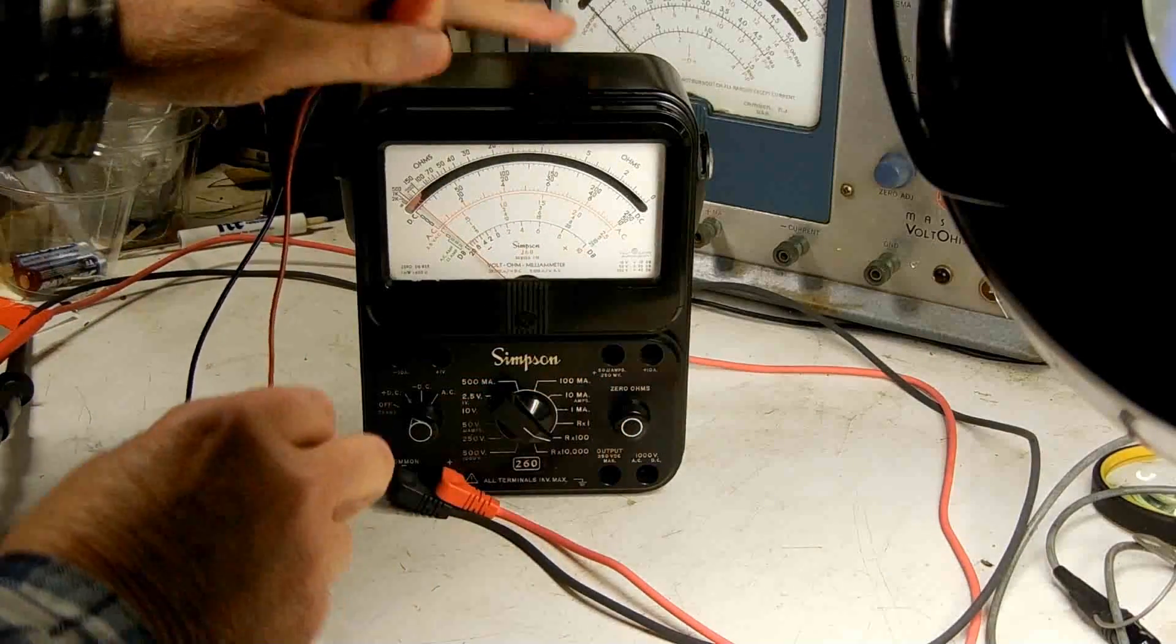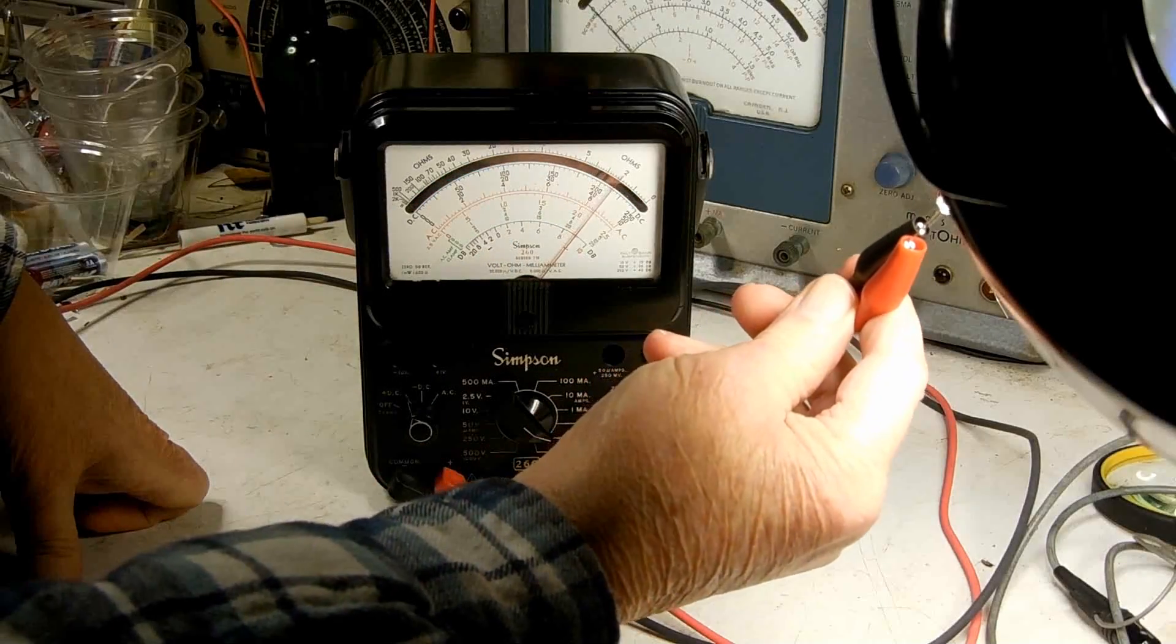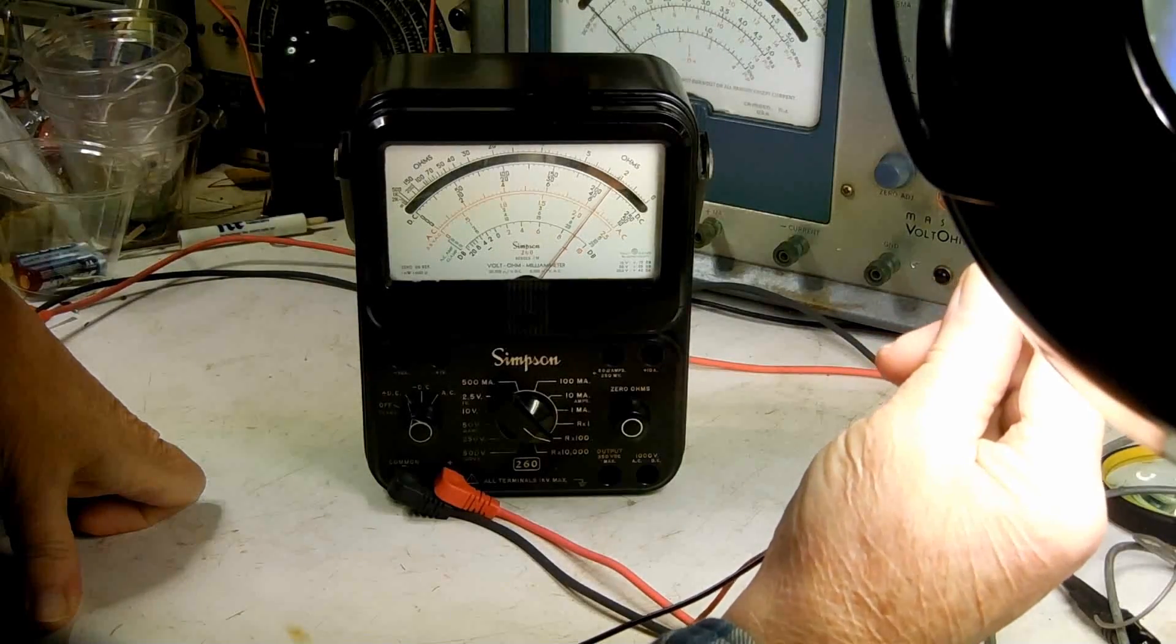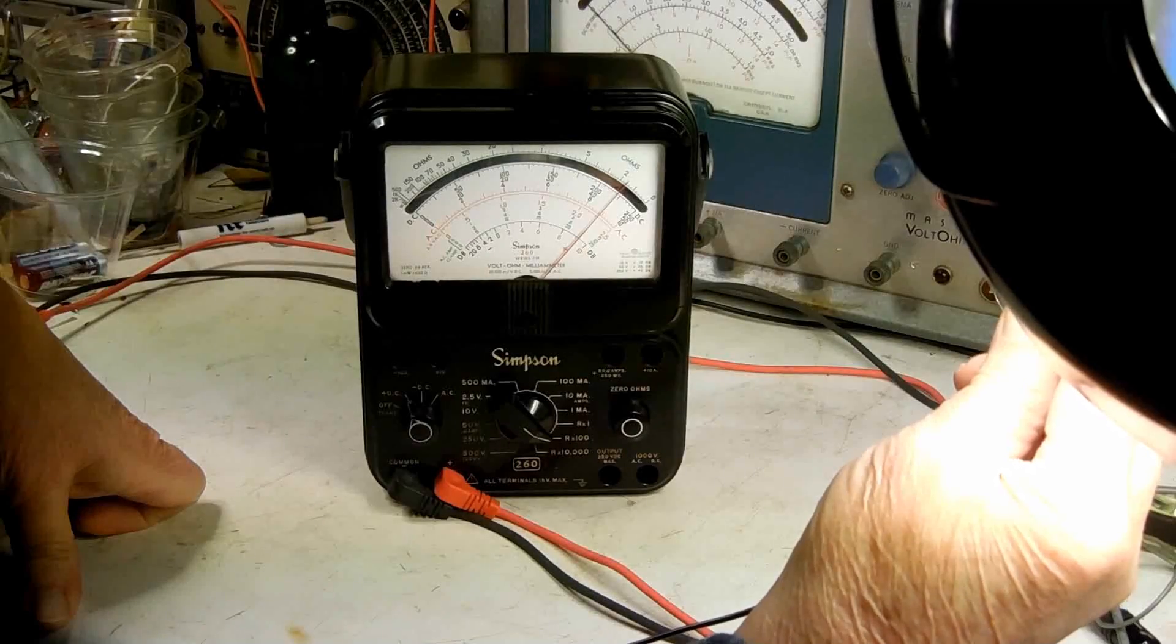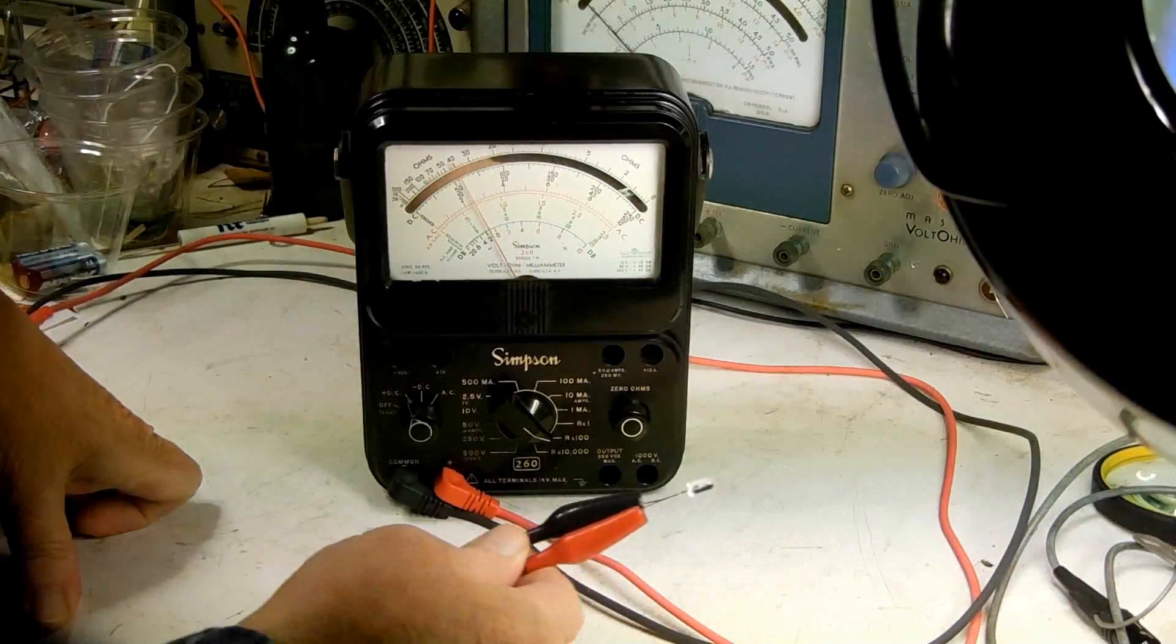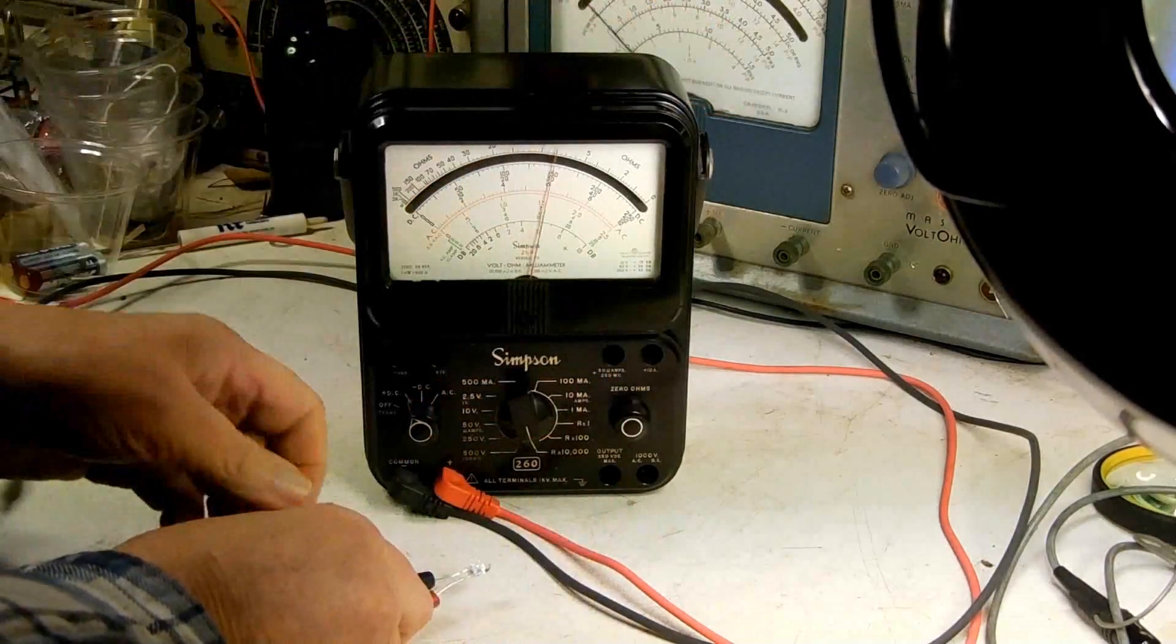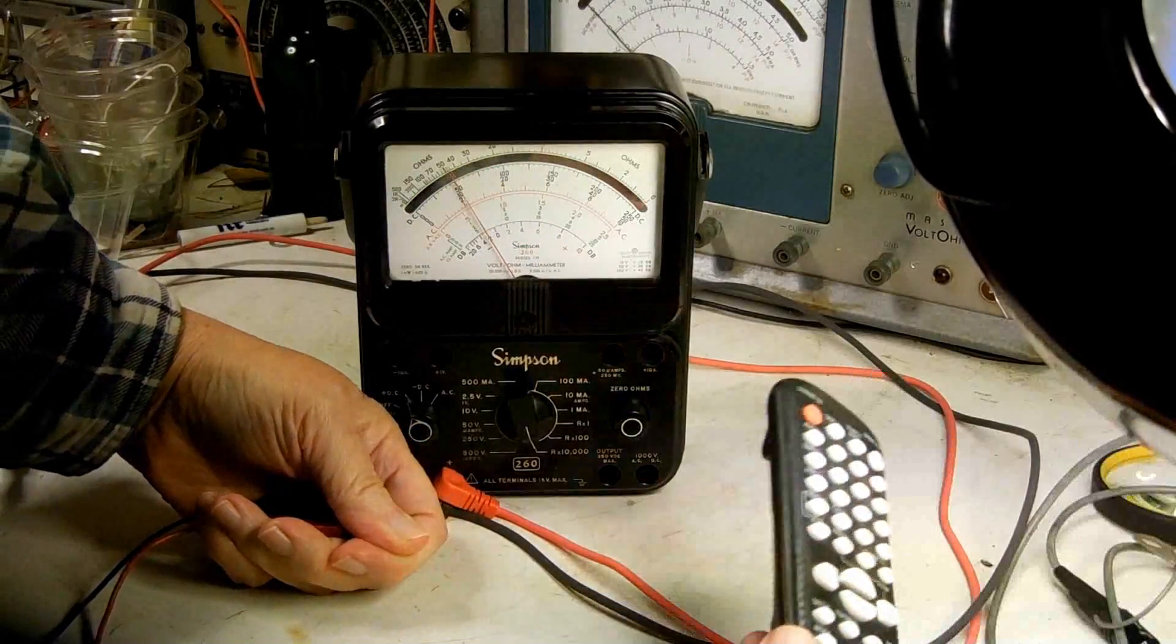I'm going to change the scale so I can get an accurate reading of the resistance when I hold it right next to the light. It reads at the highest light, or the lowest resistance, of about 180 ohms. I'm going to switch the meter back to its most sensitive setting.